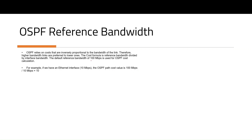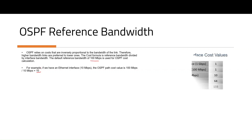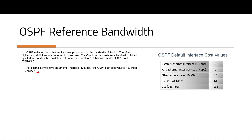The default reference bandwidth is 100 Mbps. If you look at Ethernet, the reference bandwidth divided by the interface bandwidth gives a cost of 10. For different bandwidths there are different costs — Fast Ethernet and Gigabit Ethernet will have a default cost of 1, while DSL and DS1 have costs of 64 and 133 respectively.